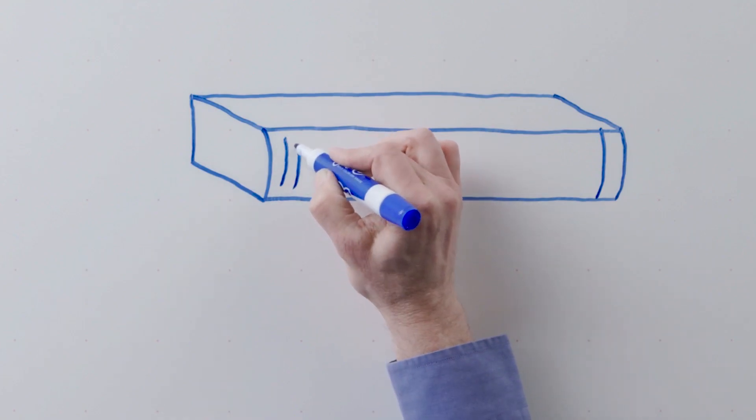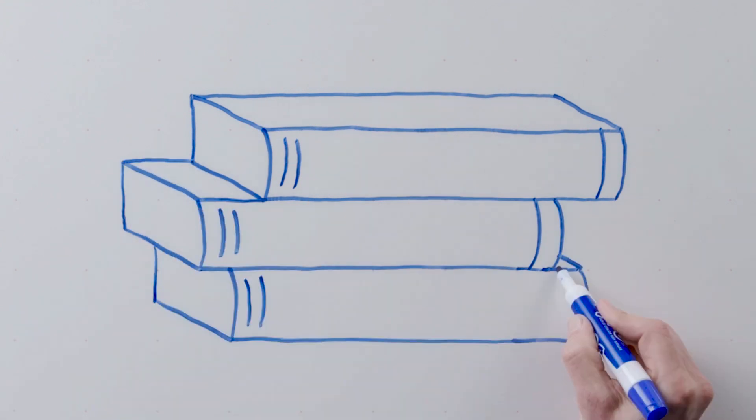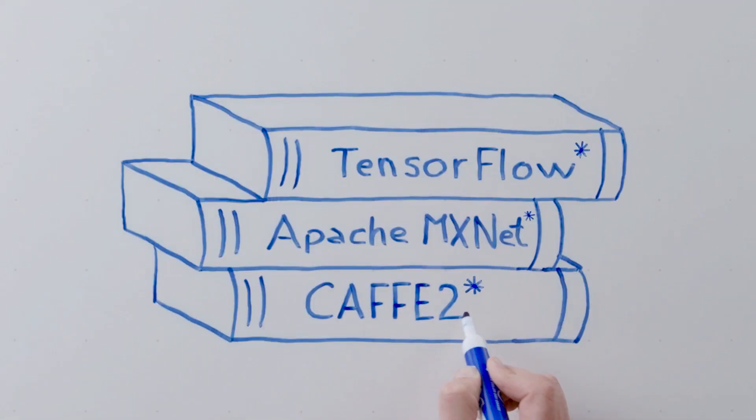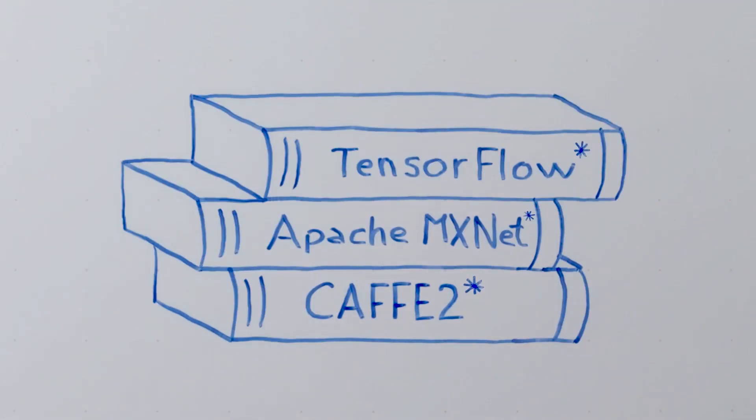Software goes hand in hand with hardware, so we're optimizing the most popular open source deep learning frameworks like TensorFlow, MXNet, CAFE2 to get the most performance out of the second generation processor.